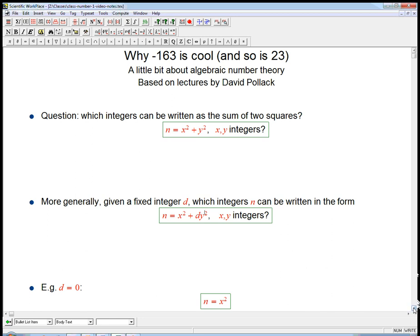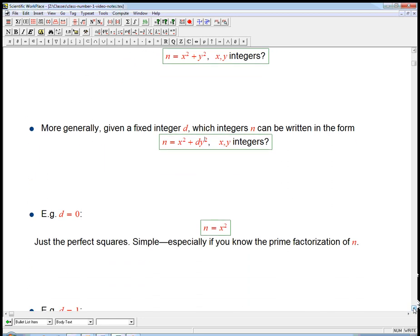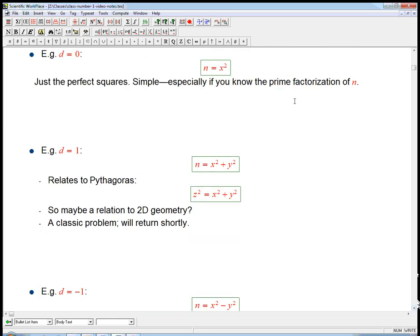Let's look at the first version, a really easy version where d = 0. That's just going to be n = x². So it's just all things that are perfect squares. It's a simple answer, although if I just give you a 23-digit number n, you might actually have a hard time figuring out if it's a perfect square or not unless you have a calculator.